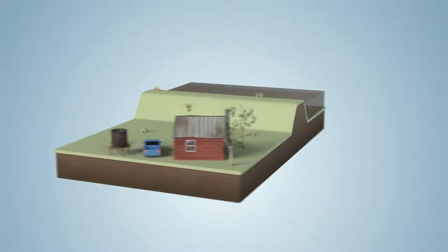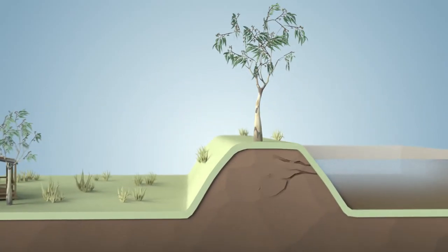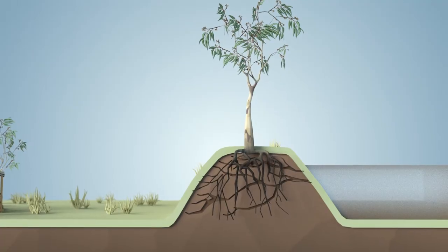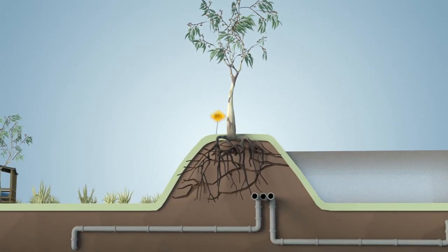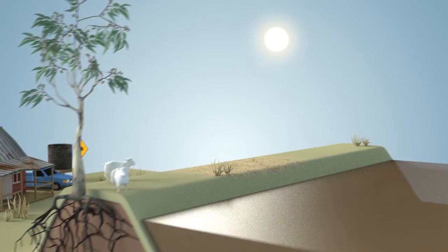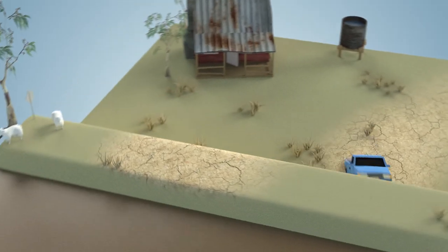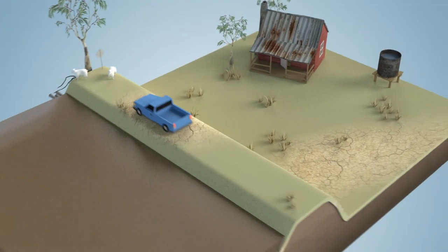A levee's ability to hold back flood water can change over time and be affected by factors such as erosion caused by tree roots, pipes, burrowing animals, grazing livestock, and cracking due to hot and dry summer conditions. Driving cars over a levee can also weaken its condition if the levee is not designed for vehicle access.